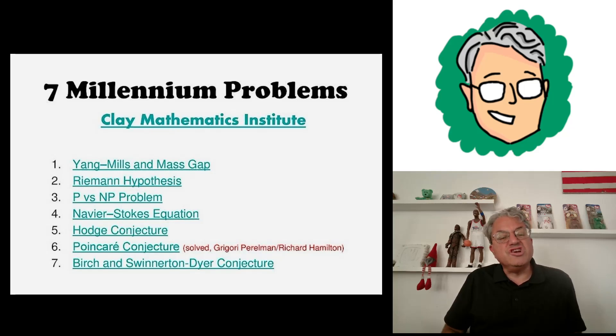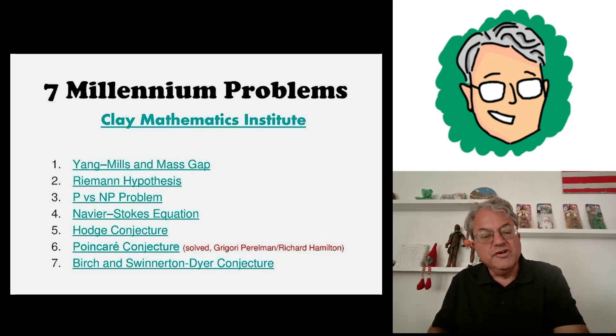Then the Birch and Swinnerton-Dyer conjecture. I actually worked on this one for a while. This one's really interesting to me. This is a number theory problem. It has important applications for elliptic curves. I think it says that the rank of every elliptic curve is finite. That's a very difficult problem to prove. I worked on it for a while. I couldn't do it.